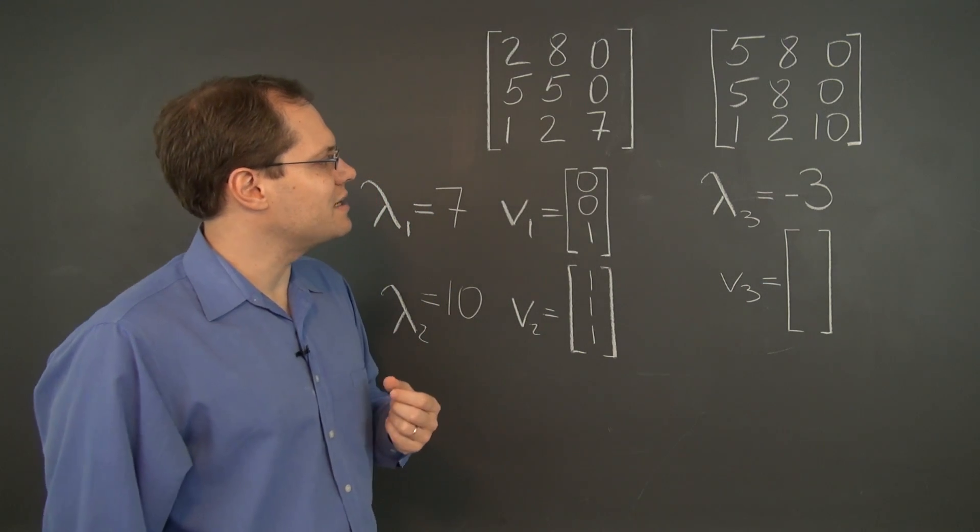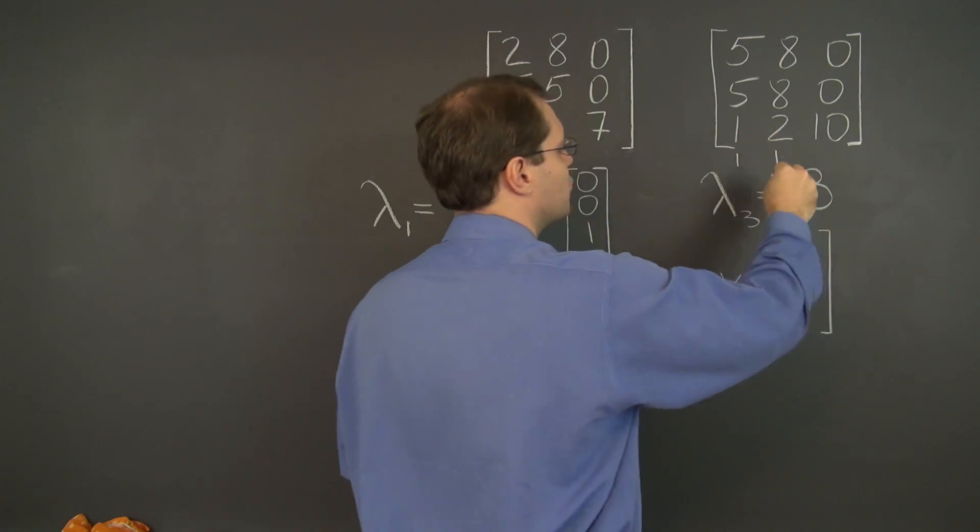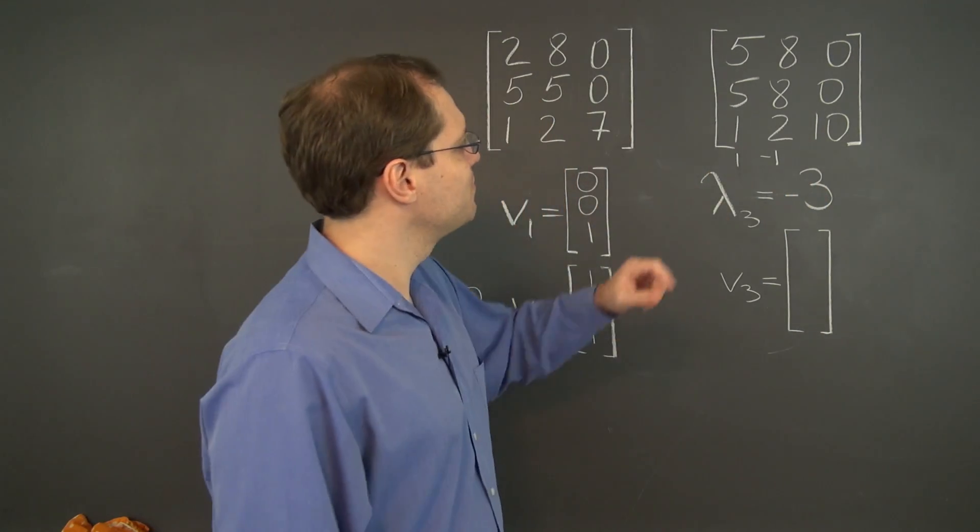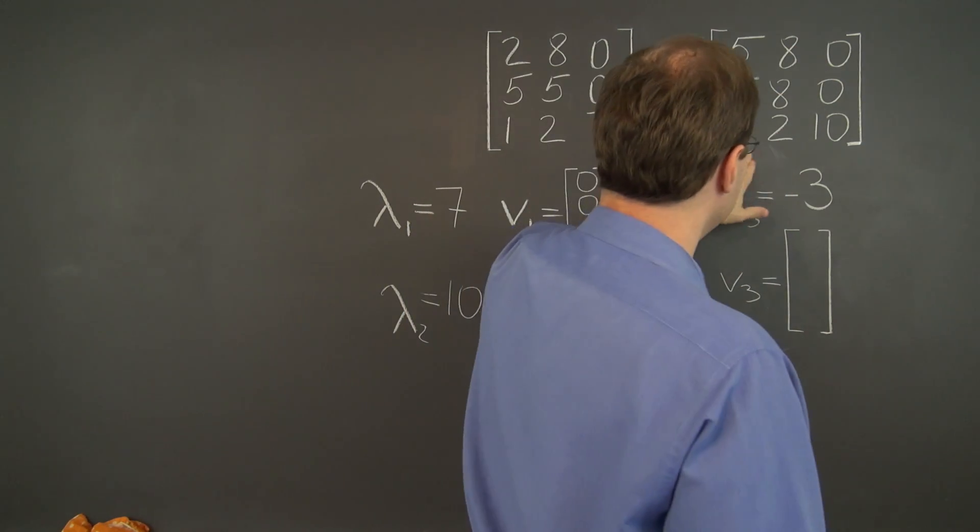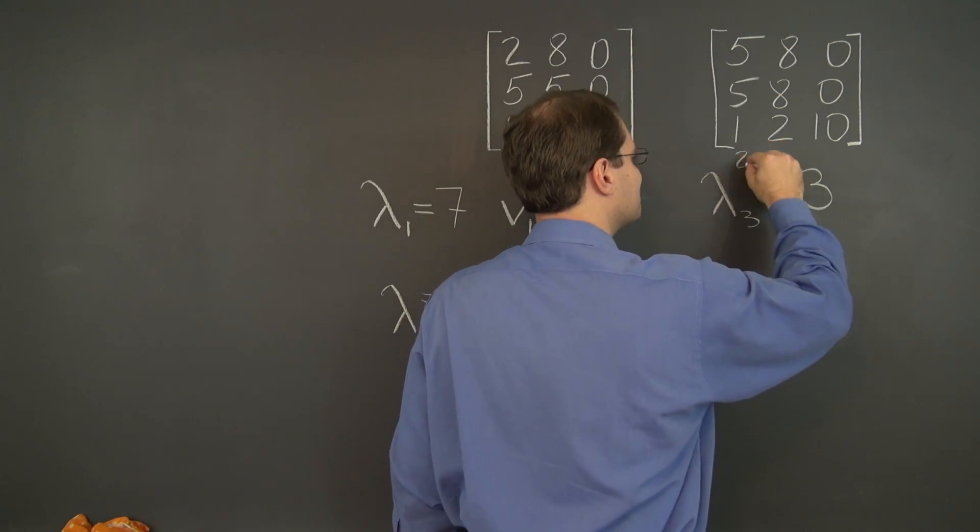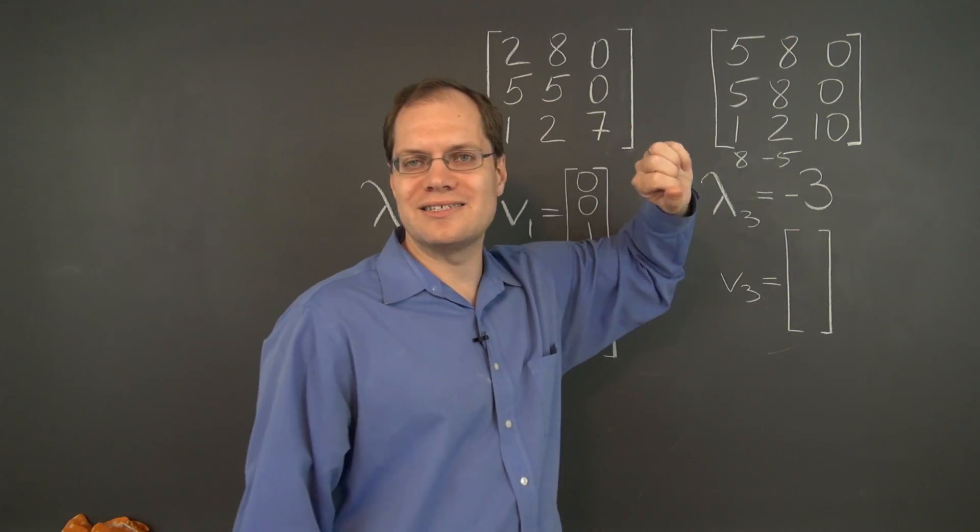A very satisfying feeling. And of course we need to take these columns in proportion 1, negative 1. Oh no, what am I saying? We have to take the first two columns in proportion 8, negative 5, so that the first two entries cancel.